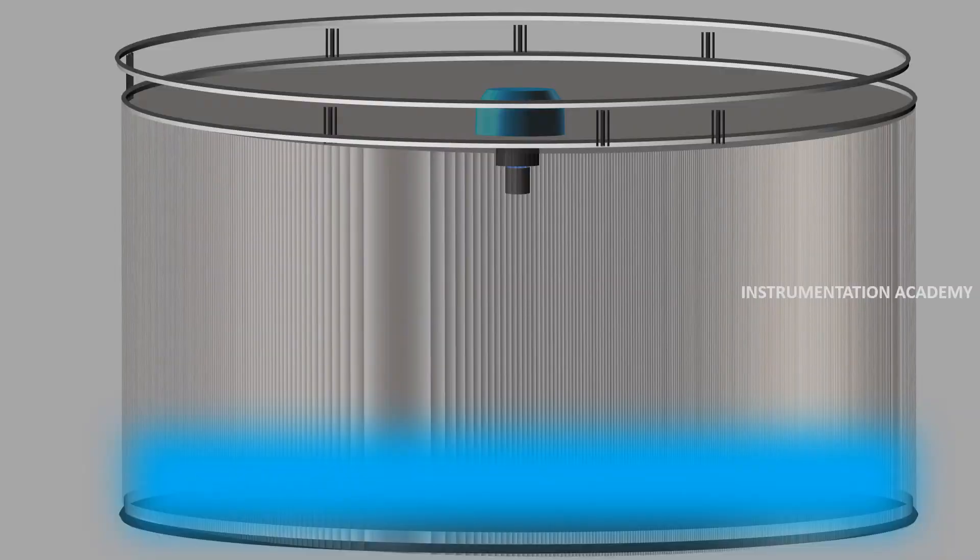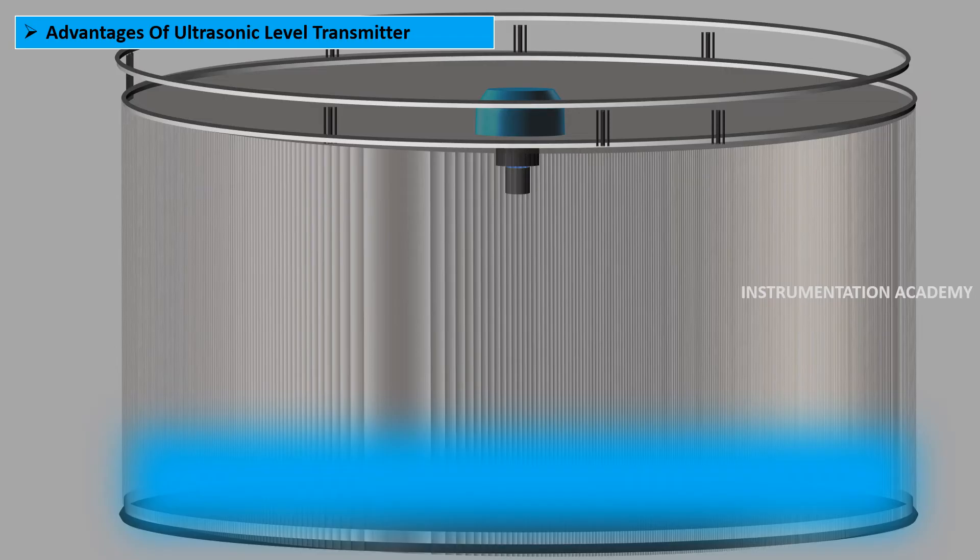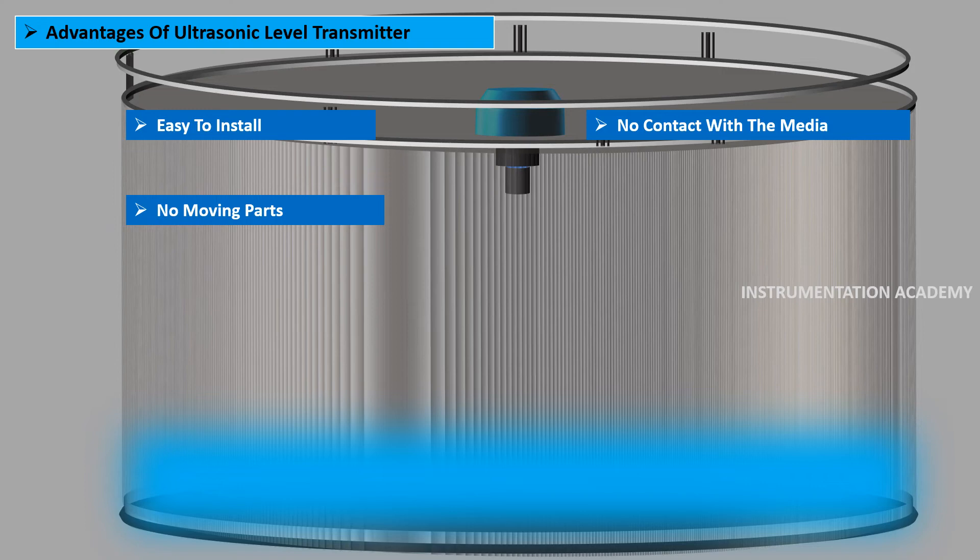Now let's move on to the advantages of ultrasonic level transmitter. Ultrasonic transmitters are easy to install on empty tanks or on tanks containing process media. As there is no contact with the media and as it has no moving parts, the devices are maintenance free.